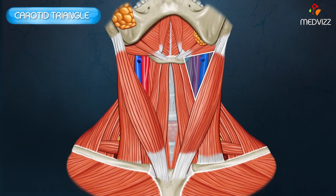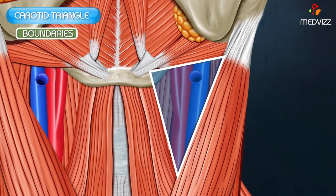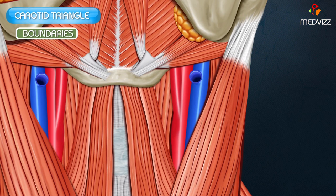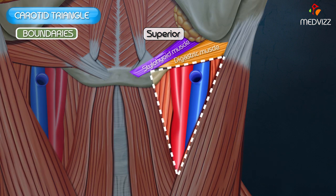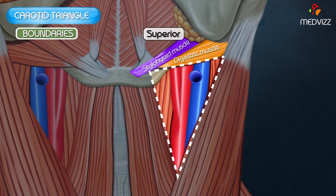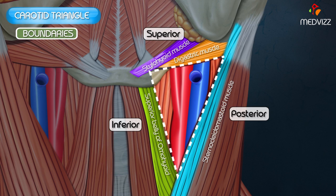Let us discuss the boundaries of the carotid triangle. The superior boundary is formed by the posterior belly of the digastric muscle as well as the stylohyoid muscle. The inferior boundary is formed by the superior belly of the omohyoid, and posteriorly the anterior border of the sternocleidomastoid muscle. These three are the boundaries of the carotid triangle.